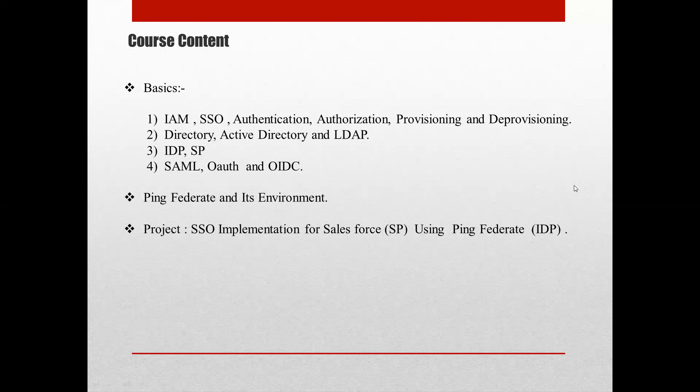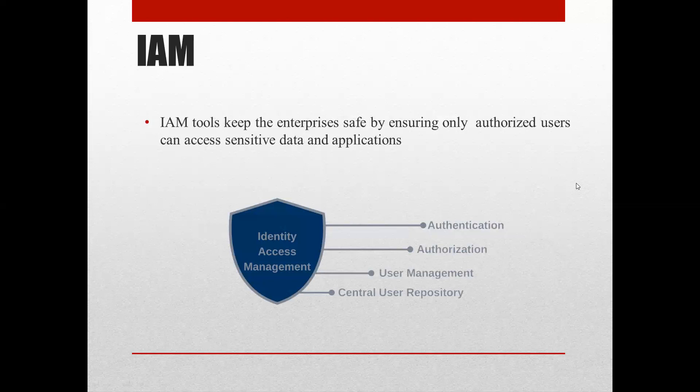Let's start with the first topic: IAM, which stands for Identity Access Management. It ensures that only authorized users can access sensitive data and applications. Identity refers to tracking and managing objects like users, groups, and devices. Access refers to granting permissions to those identities — users, groups, or devices.